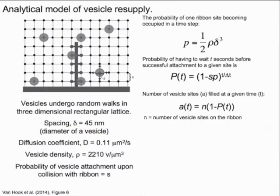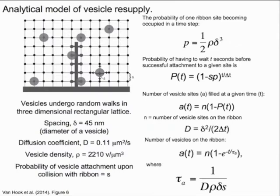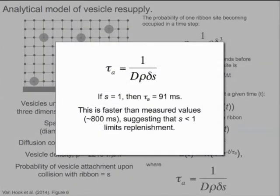Using a definition of the diffusion coefficient, along with the probability of a vesicle attaching to the ribbon, we find we can represent the number of vesicles on the ribbon with this function. As we describe in more detail in the paper, this model allowed us to derive a fundamental time constant governing the rate of vesicle resupply to the ribbon. The time constant is equal to 1 divided by the product of the diffusion coefficient, the density, the vesicle spacing, and the attachment probability.